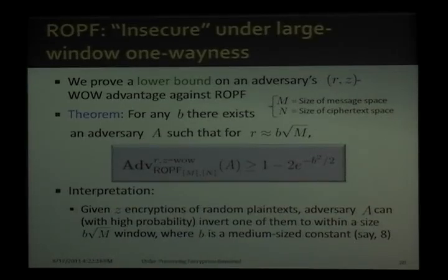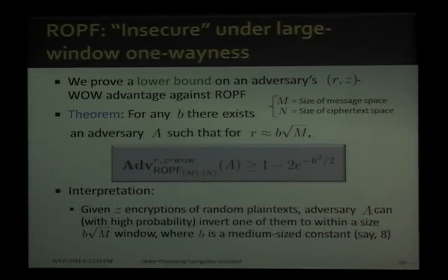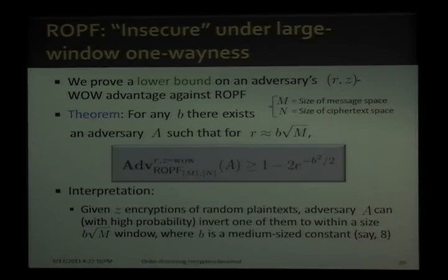Our second main result is that a random order-preserving function is insecure under large window one-wayness. We construct an adversary and lower bound its window one-wayness advantage against ROPF. The proof involves tail inequalities on a probability distribution. The lower bound on the adversary's advantage shows that R is approximately a constant b times the square root of M. If b is a medium-sized constant such as 8, then this value is very close to 1 — so for a window size 8 times the square root of M, the adversary is almost certain to win. Given Z encryptions of random plaintexts, the adversary we construct can with high probability invert one of them to within a window of size b times the square root of M.